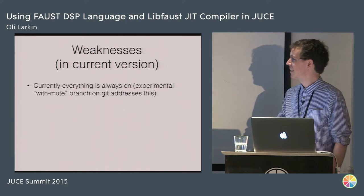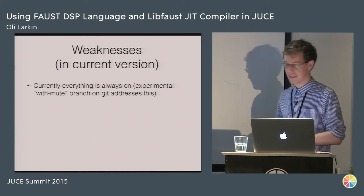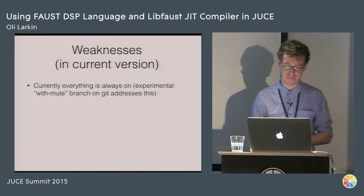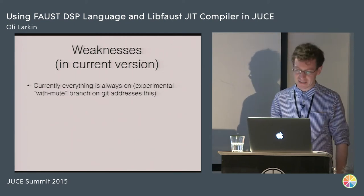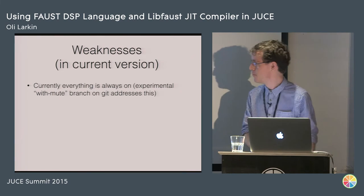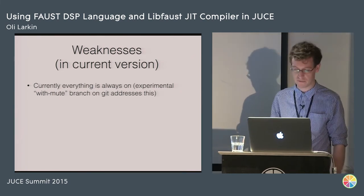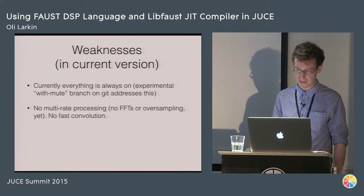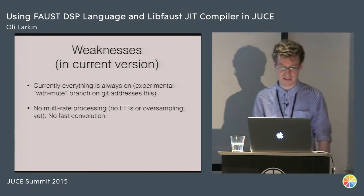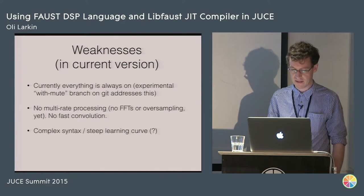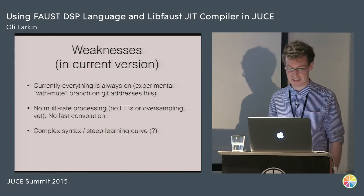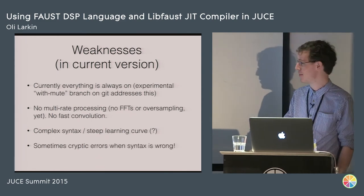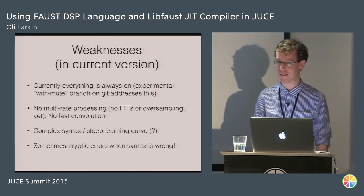Weaknesses: a pretty major one is that currently everything is always on. When we're doing real-time DSP, we want to switch bits of code on and off very often, and this is something Faust isn't great at — though there is an experimental branch on the Git repository that addresses it. Another big problem is that you can't do multi-rate processing — again, there's an experimental branch and hopefully this will be in Faust one day. The syntax is pretty complicated and it's a steep learning curve. And the errors from the compiler are sometimes extremely cryptic, with half a page of text that you have to try to decipher.